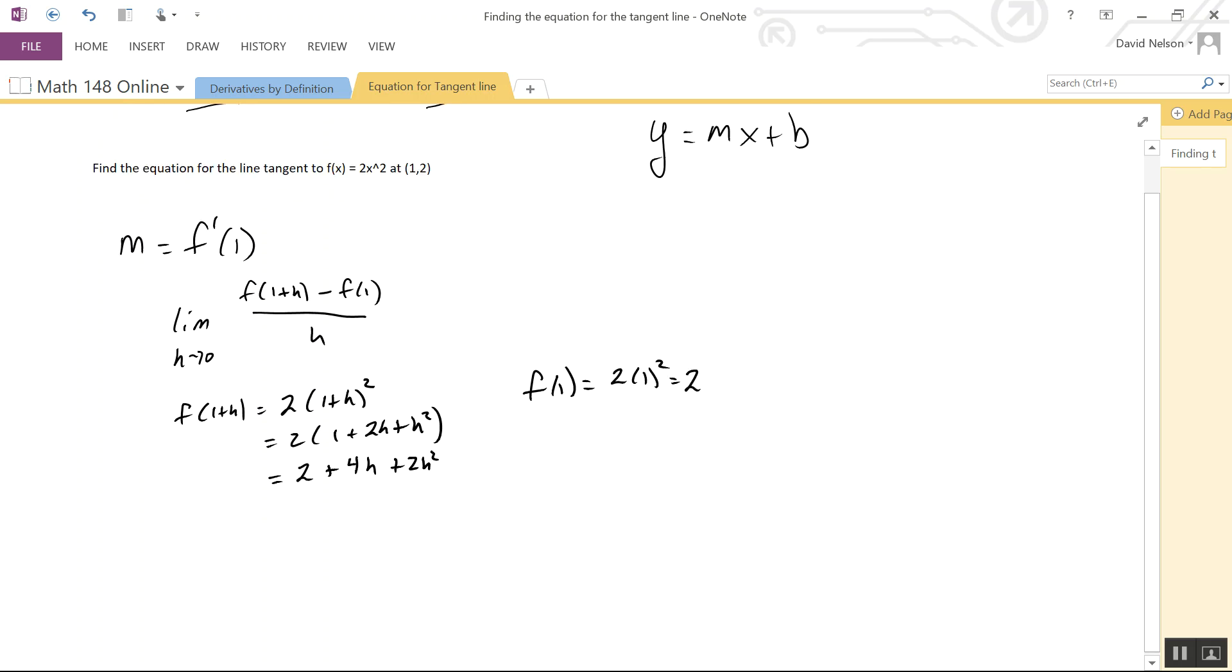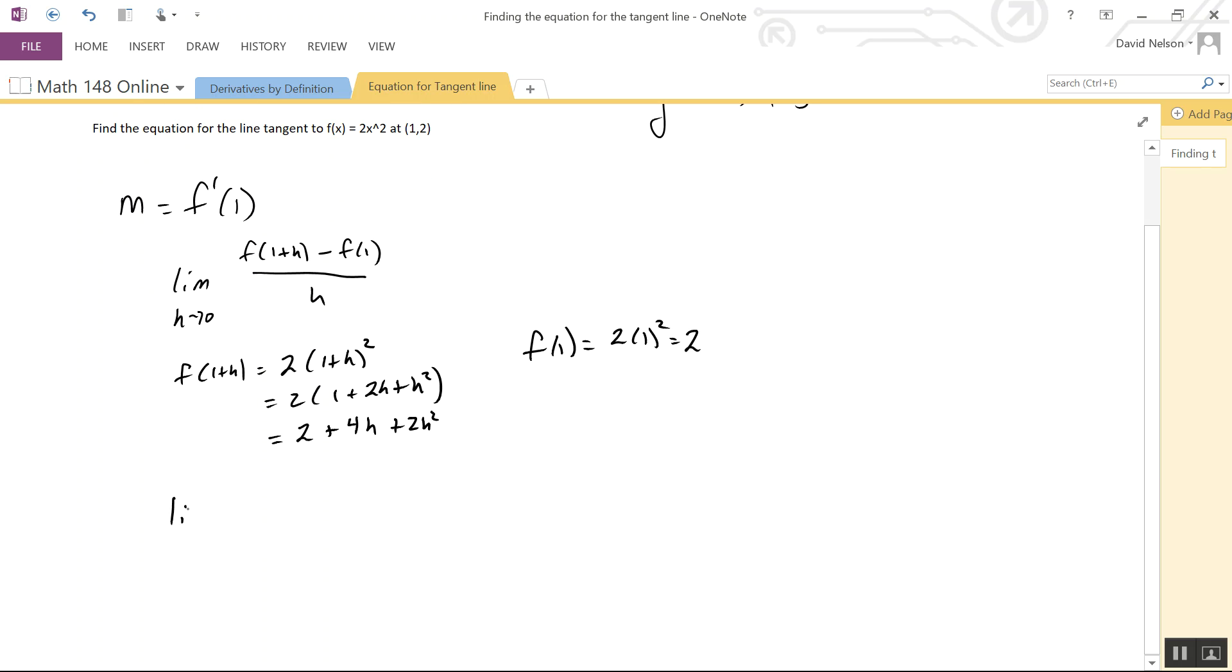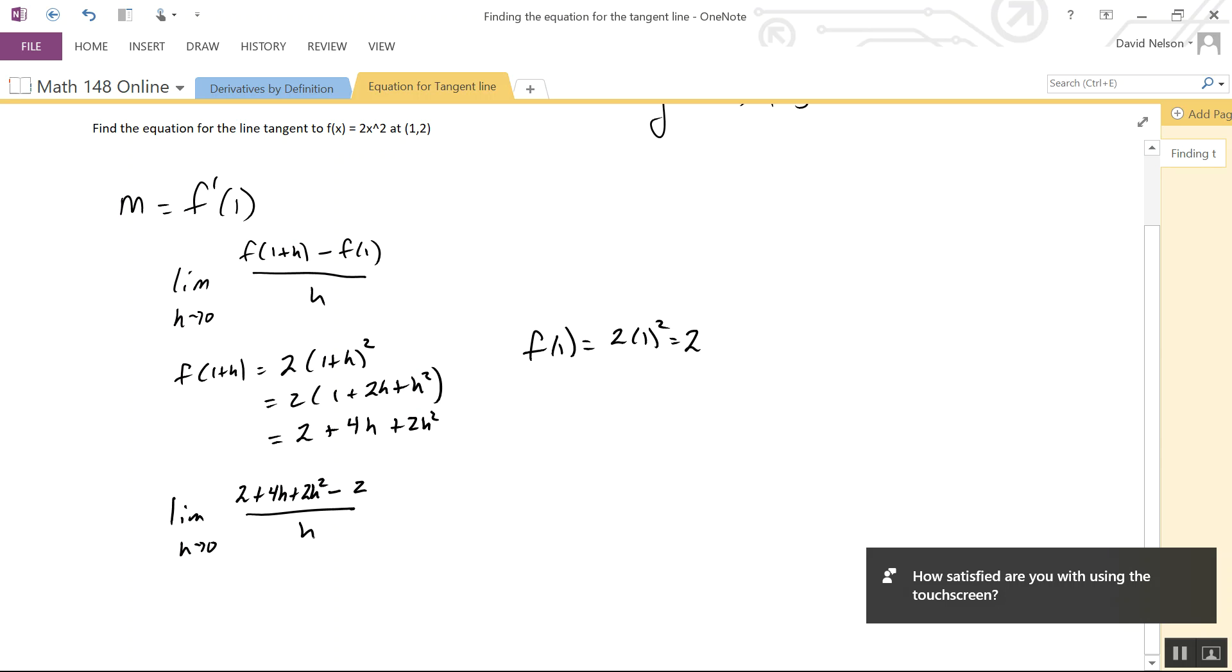To use the limit definition, I take the limit as h goes to 0 of (2 + 4h + 2h²) minus 2, all divided by h.